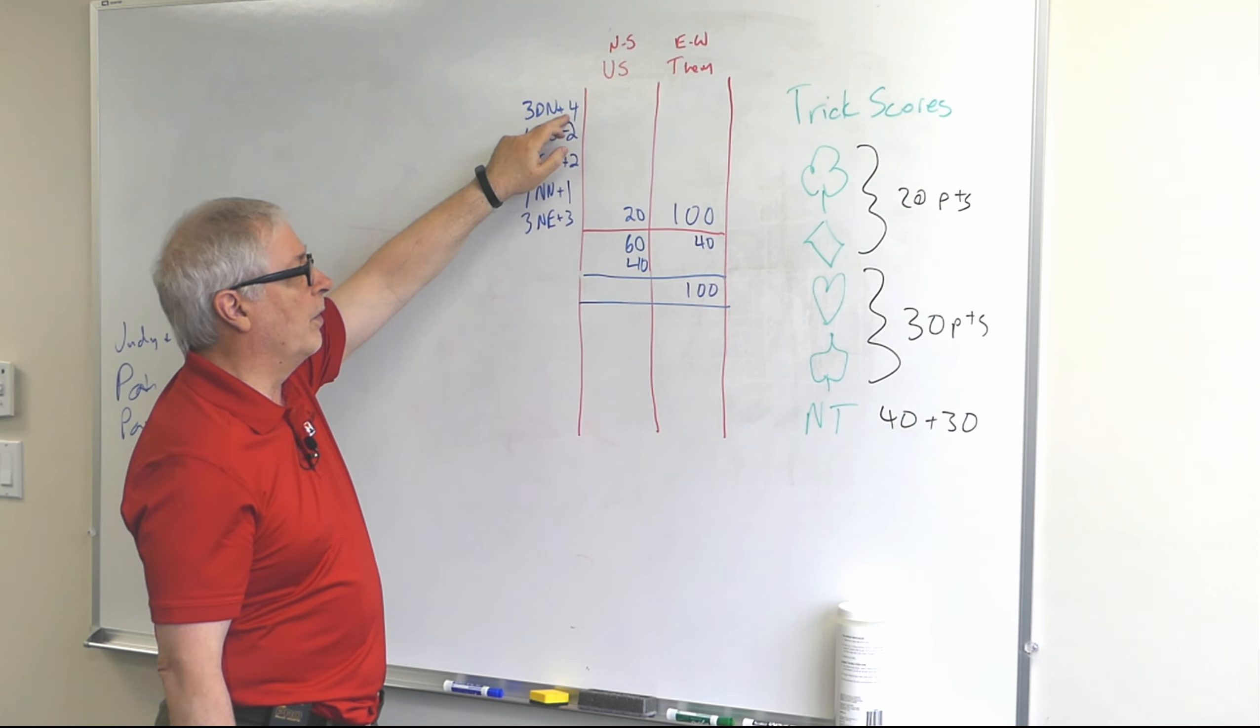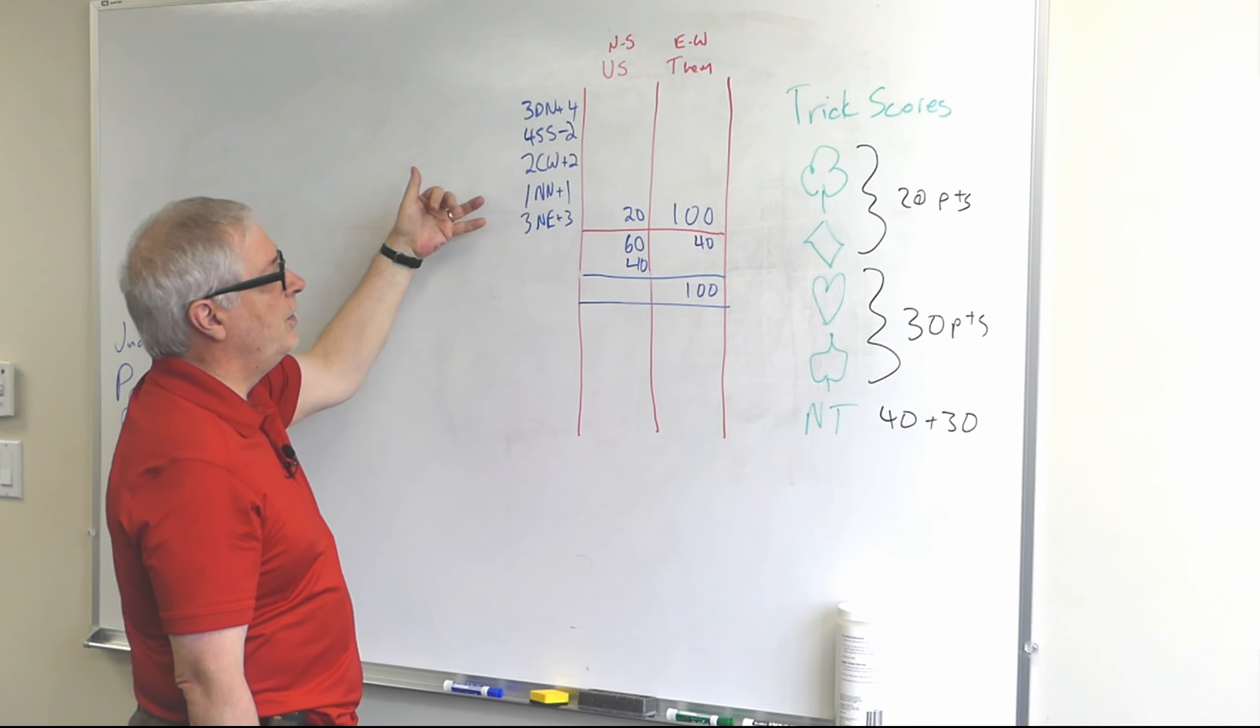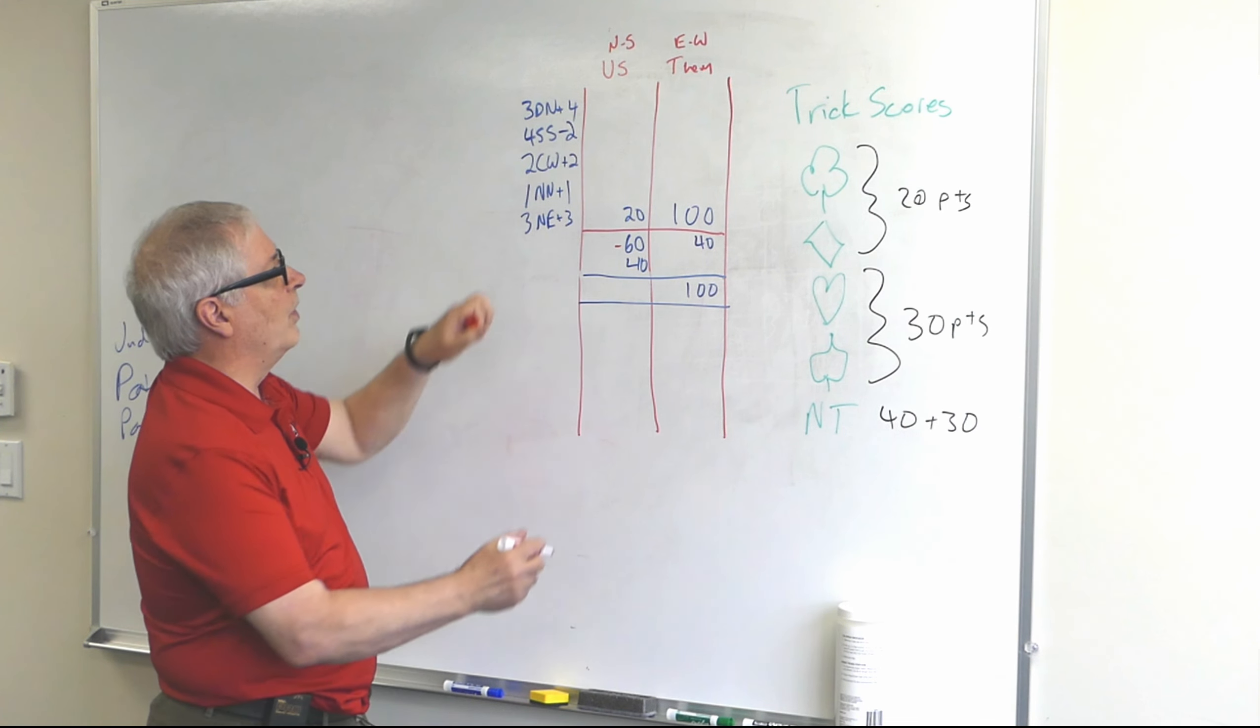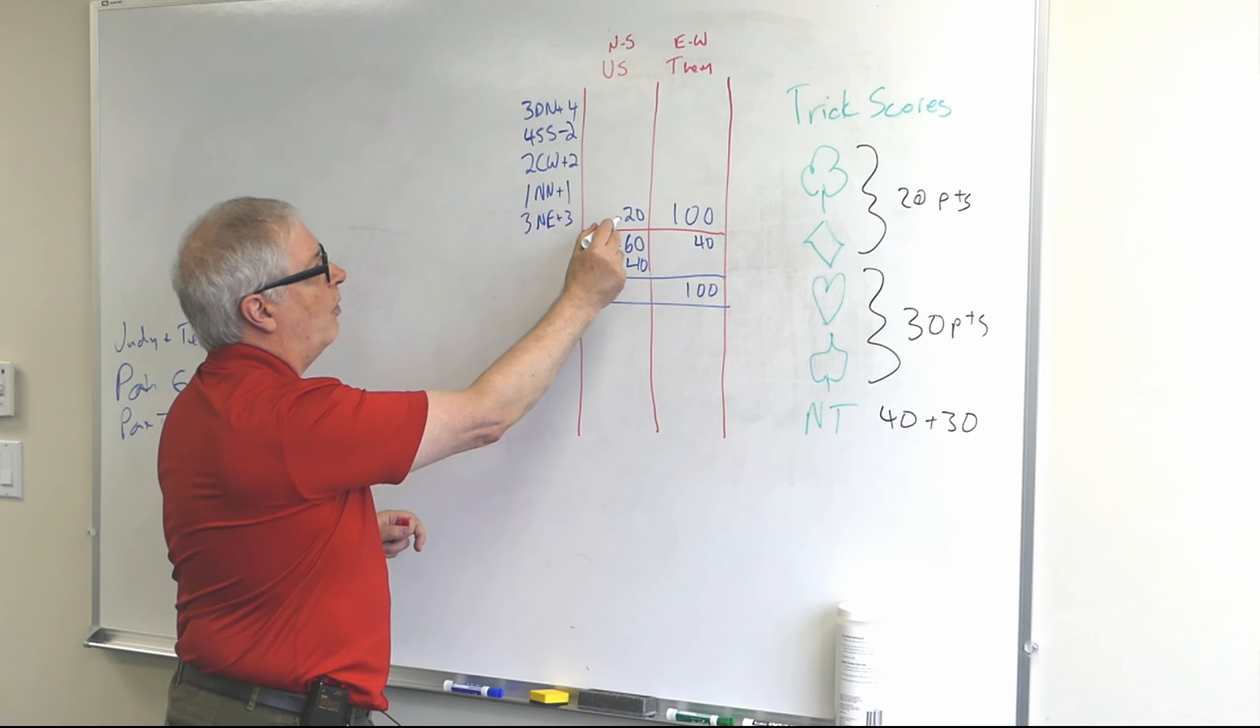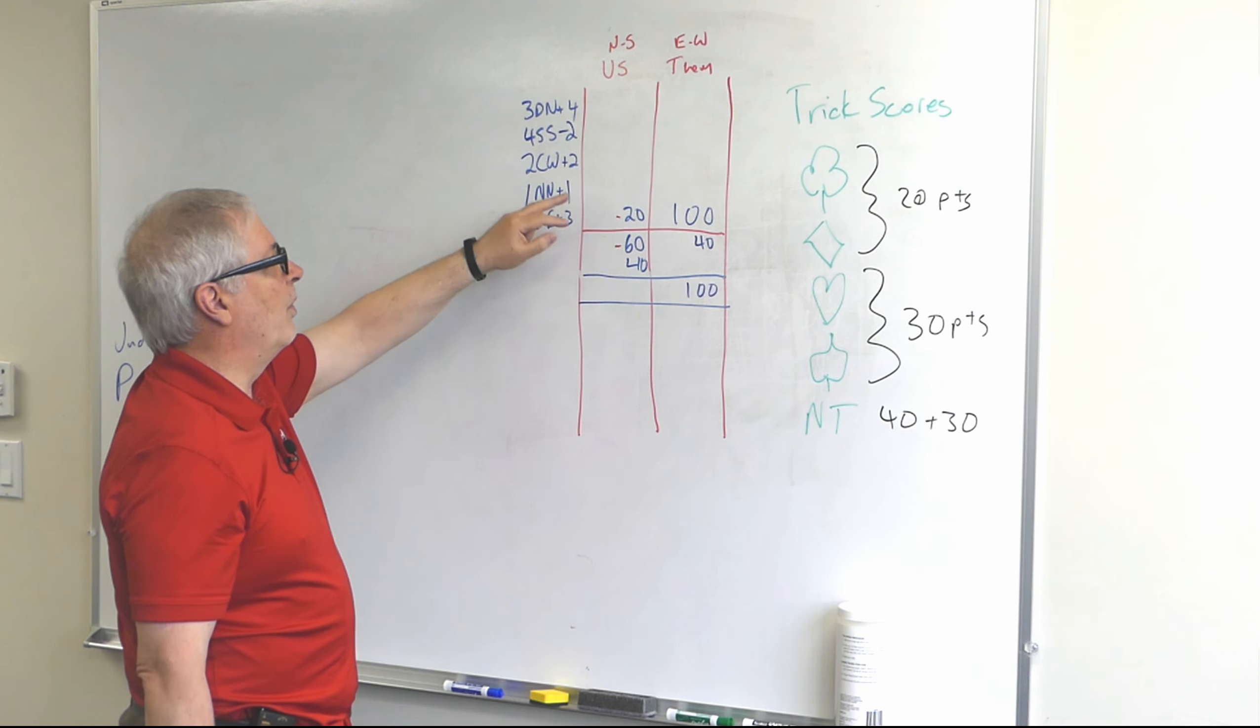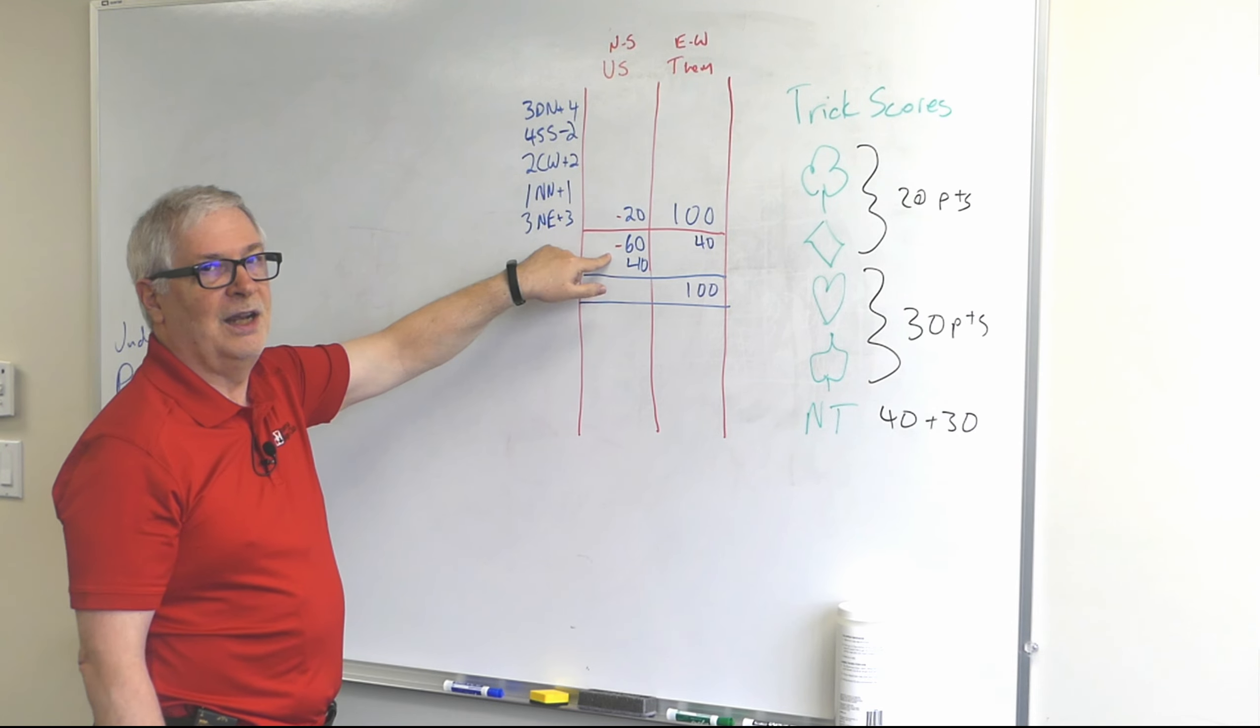Let's recap this. The first hand - three diamonds by North making four, that's one overtrick. Three diamonds, diamonds get 20 points a trick, so one two three that's 60 points. That's this score here. Now we made an overtrick so we get another 20 points, but it goes above the line because it doesn't contribute to making a game. This is three diamonds. Those three tricks get you 60 points below the line, that's 20 points each. Since we made an overtrick we get another 20 points, but it didn't contribute to making a game.